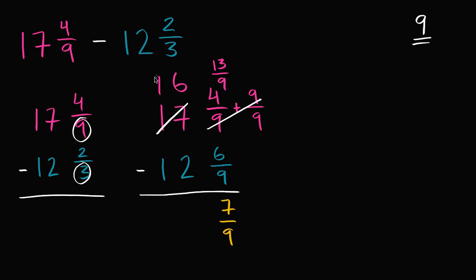And then I can look over in the whole number place. All I have left is 16 here. 16 minus 12 is 4, and I'm done. 17 and 4/9 minus 12 and 2/3 is equal to 4 and 7/9.